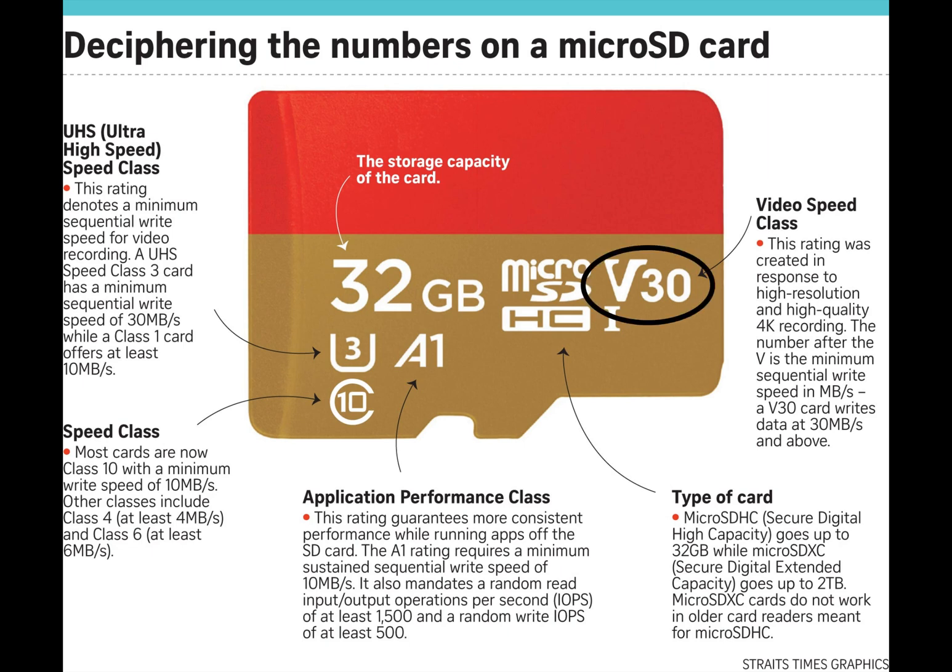The last rating is the V rating — the Video Speed Class. This rating was created in response to high-resolution, high-quality 4K recording. The number after the V is the minimum sequential write speed in megabytes per second — a V30 card writes data at 30 MB/s and above.